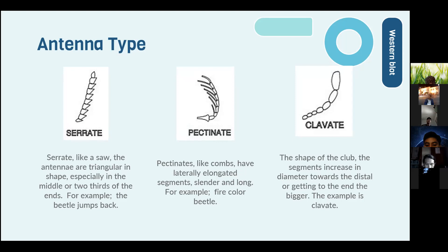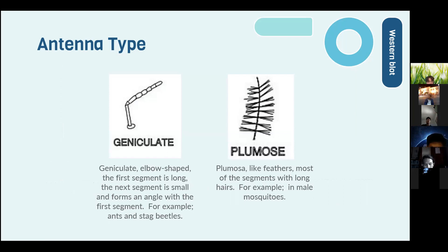Fifth, clavate — club-shaped, segments increasing in diameter toward the distal end (e.g., bark beetles). Sixth, geniculate — elbow-shaped, the first segment is long and the next segments form an angle with it (e.g., ants and weevils). Seventh, plumose — feather-like, most segments bearing long hair (e.g., male mosquitoes).